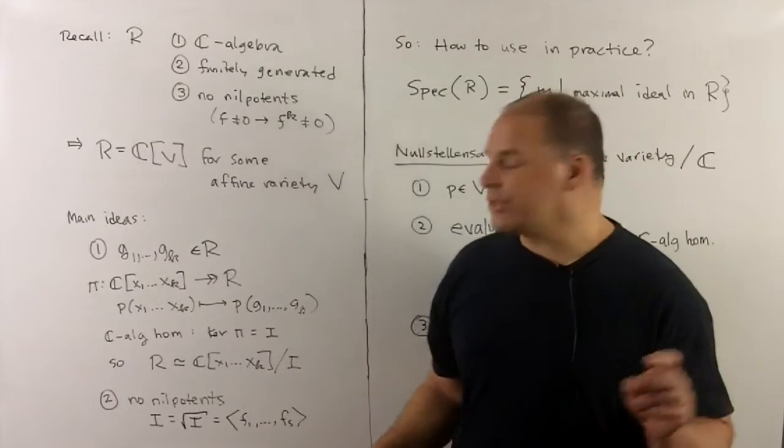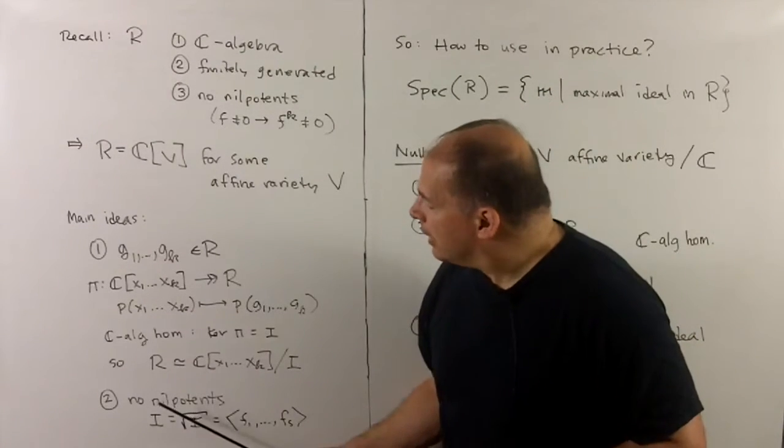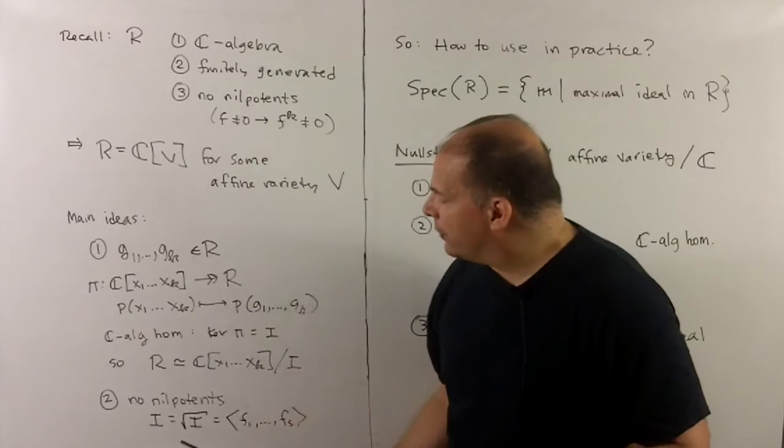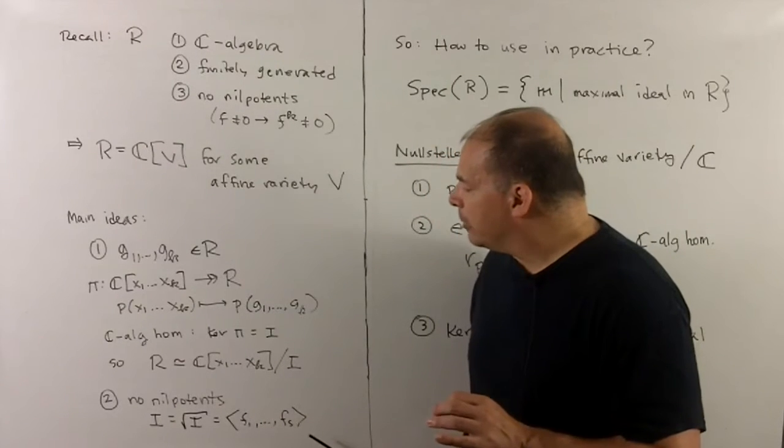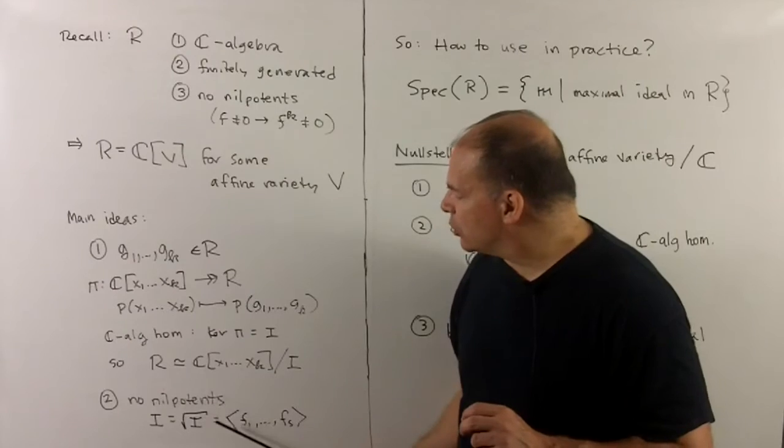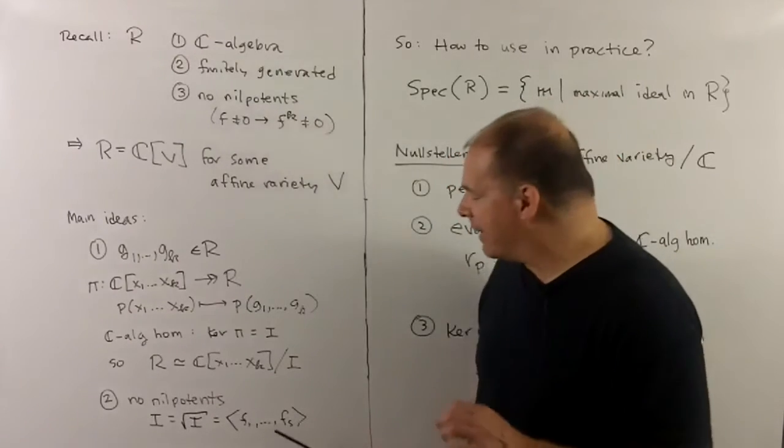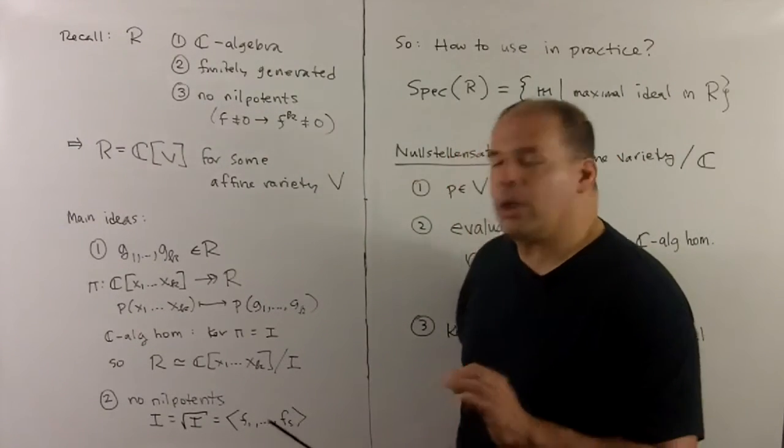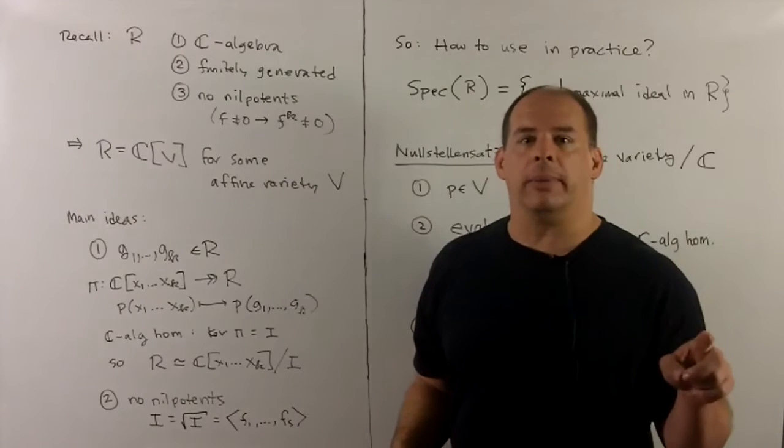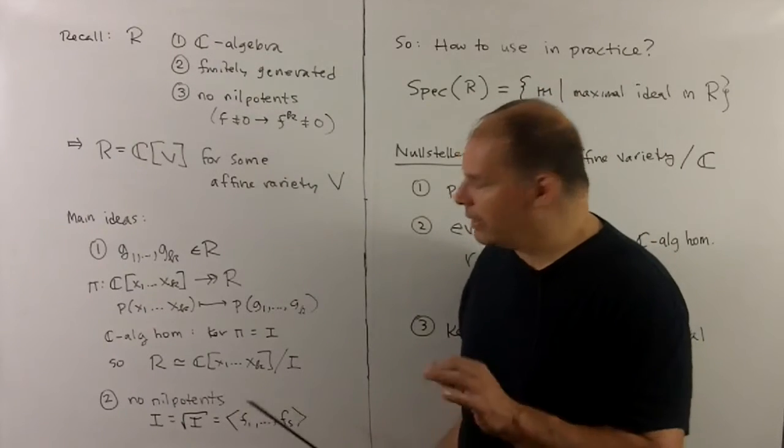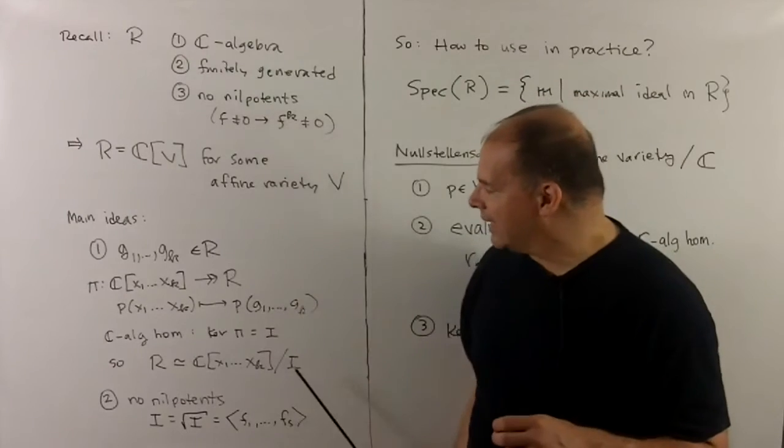Because we have no nilpotence, what's that mean? Well, our polynomial ring is Noetherian, so I is finitely generated. But because there are no nilpotents, I is equal to its radical, which is the same as saying that none of these elements here are powers of another element. And then we have to clean up some, but that's the general idea.